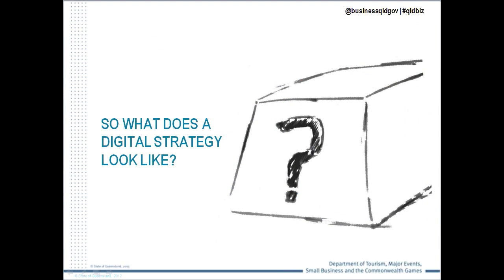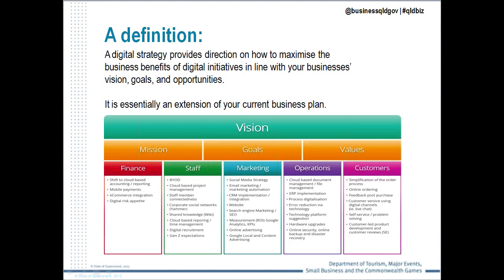What does a digital strategy actually look like? You can ask 10 different people and get 10 different answers. So many people get confused — they think that having a Facebook page, giving staff an iPad, or using computers in day-to-day work means they have a digital strategy. But the reality is that this is only part of what a digital strategy is, not the digital strategy itself. A digital strategy provides direction on how the business can maximise the benefits of digital initiatives in line with the business's vision, goals and opportunities — it is almost a direct extension of the business plan.